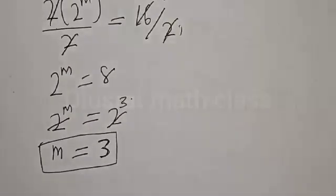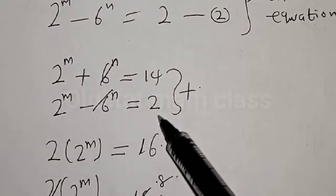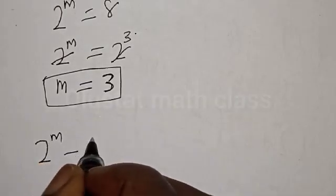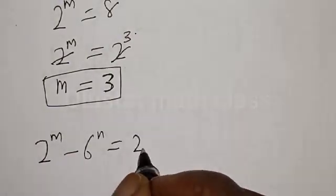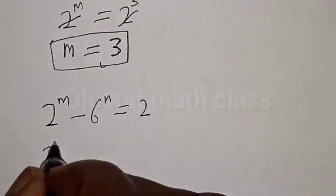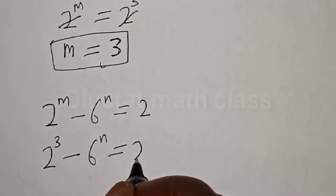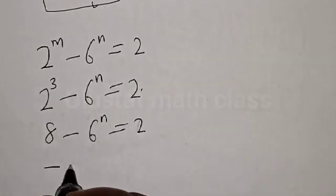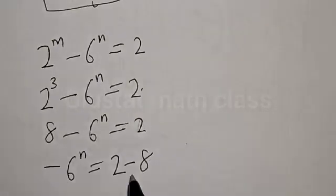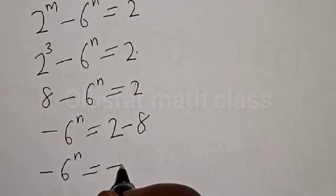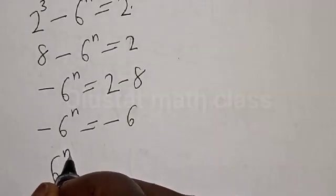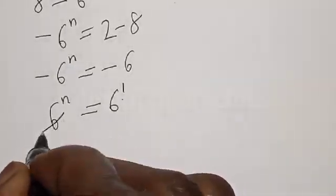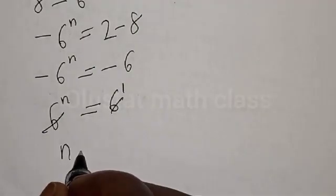Now let's substitute m = 3 into equation 2: 2^m − 6^n = 2. We get 2^3 − 6^n = 2, which is 8 − 6^n = 2. Then −6^n = 2 − 8 = −6, so 6^n = 6, which is 6 raised to power 1. Therefore n is equal to 1.